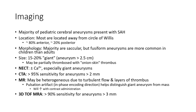Imaging: Majority of pediatric cerebral aneurysms present with subarachnoid hemorrhage. Location: Most are located in the circle of Willis, 80% anterior and 20% posterior. Majority are saccular, but posterior circulation aneurysms are more common in children than adults. Size: 15-20% of children have aneurysms more than 2.5 cm. Non-contrast enhanced CT can serve as first-line imaging classification, especially in children.